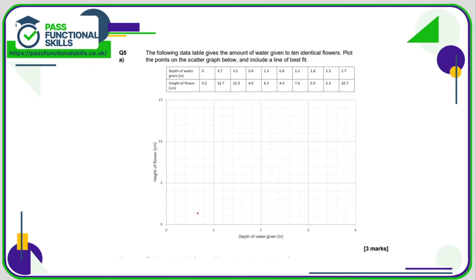Finally question number five we need to draw another scatter graph. We've got depth of water along the bottom, height of flower up the side. So depth of water zero is a height of 0.2. 3.7 is 12.7 so 10, 11, 12, 13, so it'll be about here. 3.5 is 12.9. 0.6 is 4 so 0.2, 0.4, 0.6 and that is exactly 4.